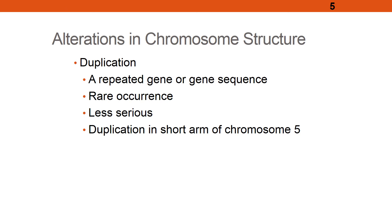Duplication is a relatively rare occurrence in chromosomal structural alterations. When a repeated gene or gene sequence occurs, the consequences should be much less severe than deletion. Going back to earlier in the lecture, more genetic material is much better than less — so having a viable fetus is much more difficult when deleting something than when adding something, as in trisomy 21.